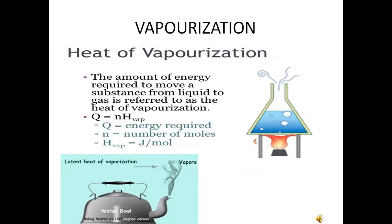Vaporization: look at a kettle kept on fire — bubbles form and the liquid water becomes water vapor. When you put a wet cloth to dry, the water evaporates into the air, leaving the cloth dry. There are two types of vaporization: boiling and evaporation. Boiling is by heating; evaporation is natural. In the gaseous state, only the arrangement of molecules changes — there is no change in chemical composition. So boiling is a physical change.